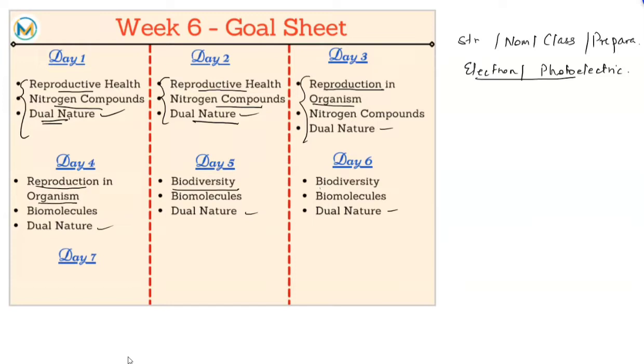Day four also we're doing reproduction in organisms. Biodiversity and conservation will be done on day five and day six. For days four, five, and six, we are doing biomolecules in chemistry. Day four, we will do carbohydrates and proteins.